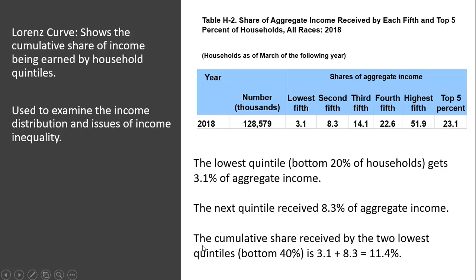Therefore, the cumulative share received by the two lowest quintiles, the bottom 40%, is 3.1% plus 8.3% or 11.4%.